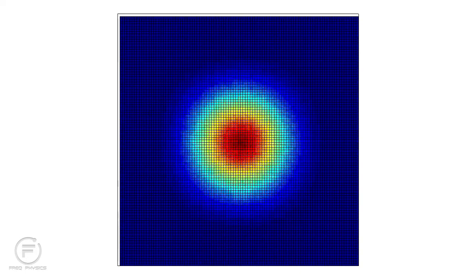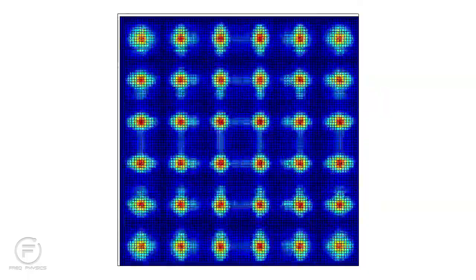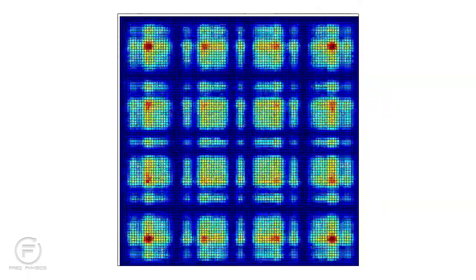For the quantum mechanical case, we start with a narrow wave function. It rapidly spreads, reflects from the box, and then produces a kaleidoscopic sequence of interference patterns.